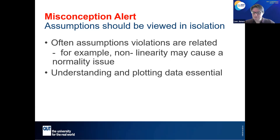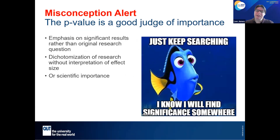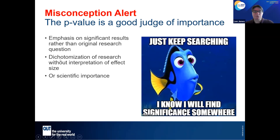Regarding p-values, the last presenter really described the problems well. The issue is p-hacking and the emphasis on significant results rather than the original scientific question. It's important that we interpret effect sizes and scientific importance rather than p-values. More than half of the papers we reviewed based their conclusions solely on the dichotomization of the p-value rather than discussing whether the finding was scientifically important.